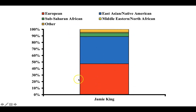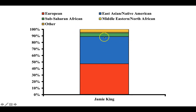This is a stacked bar graph. This segment shows that Jamie is almost 50% European, and the next segment is another almost 50% East Asian or Native American, with smaller amounts of Sub-Saharan African and Middle Eastern or North African ancestries. Together, these sum to 100% because we're capturing the full totals of Jamie's ancestry.